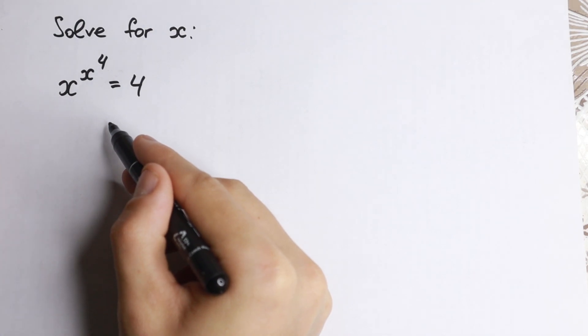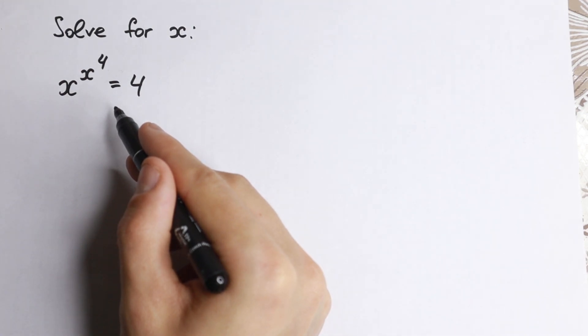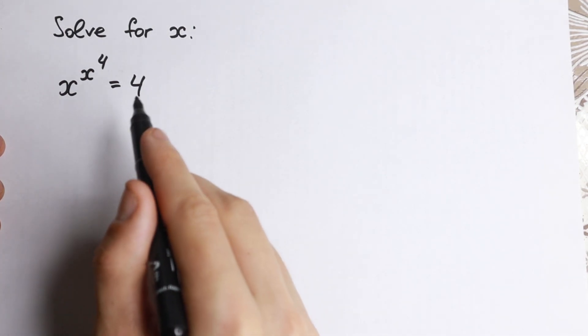At first, this looks like our case to take a log on both sides because we have an exponent right here, we have a power, so it looks like we need to use log. But I want to show you a really good approach. How can we solve this without using log?